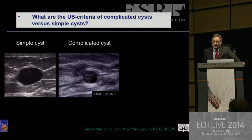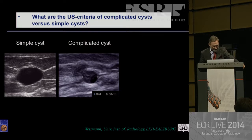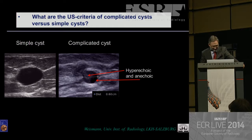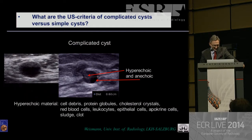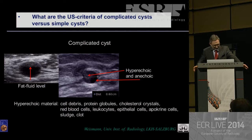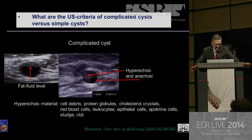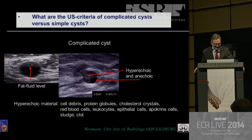Now, the complicated cyst. Why is the cyst complicated compared with the simple cyst? There is some hyperechogenicity inside the cystic lesion and maybe an anechoic part as well, so both parts may be visible. What can be this hyperechogenicity? This can be cell debris, protein globules, cholesterol crystals, red blood cells, lycosides, epithelial cells, apocrine cell sludge, or clot.